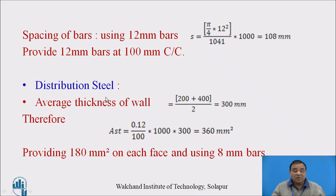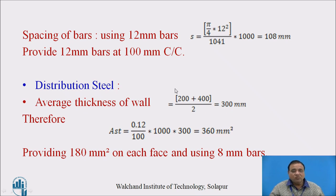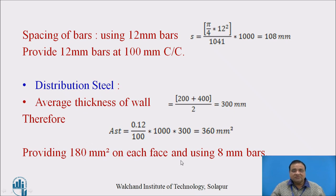Next is distribution steel, which is perpendicular to the main steel. The average thickness is considered — 200 mm at top and 400 mm at bottom — giving an average of 300 mm. Minimum steel is 0.12% for Fe415, so 0.12% of 1000 mm times 300 mm gives 360 mm squared. Provide 180 mm squared on each face using 8 mm bars.